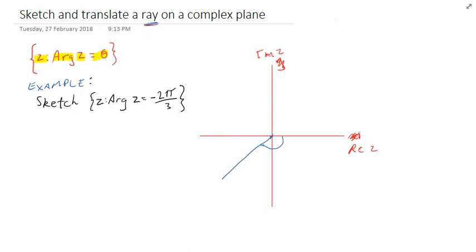Z arg z negative 2 pi on 3. I can label this as negative 2 pi on 3. Label it, draw it in, job done. I'm going to jump straight into translation of these things.